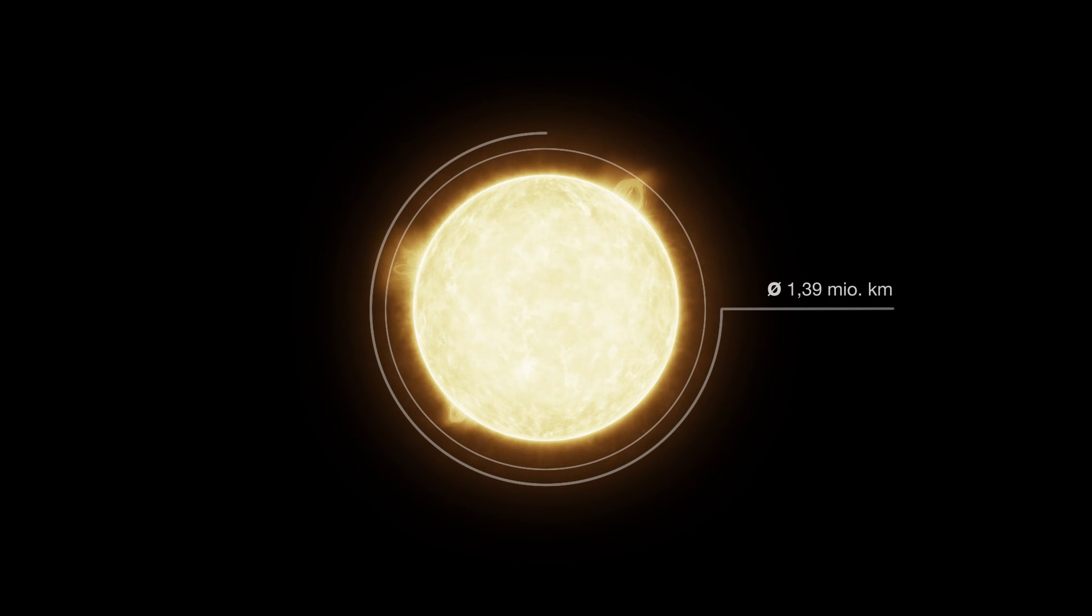This is our Sun. It has a diameter of about 1.4 million kilometers.